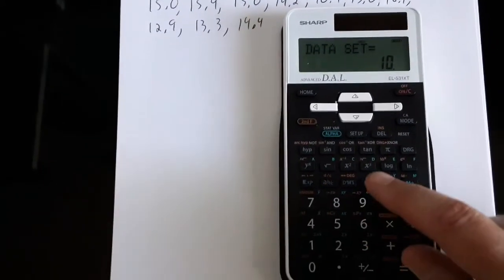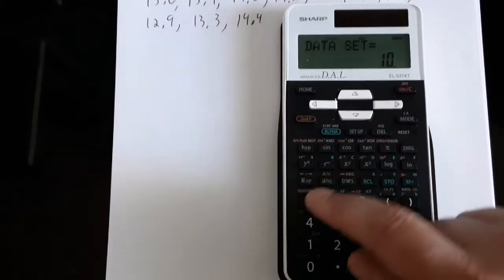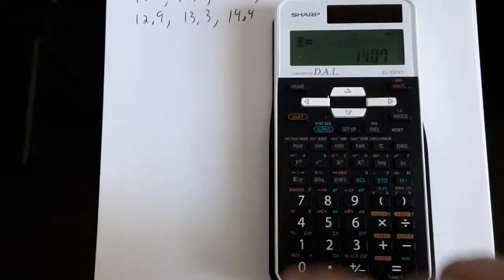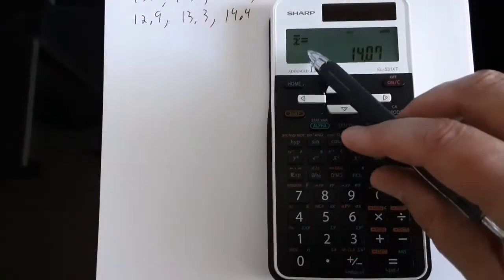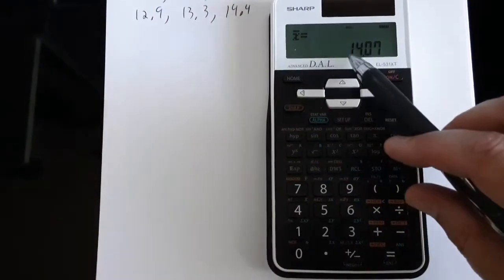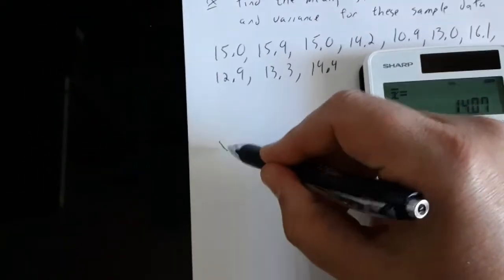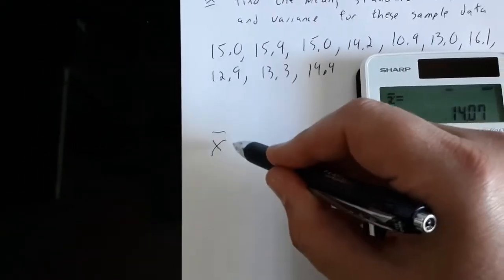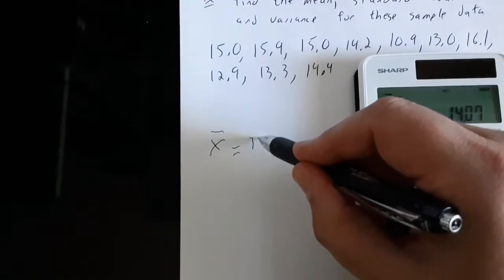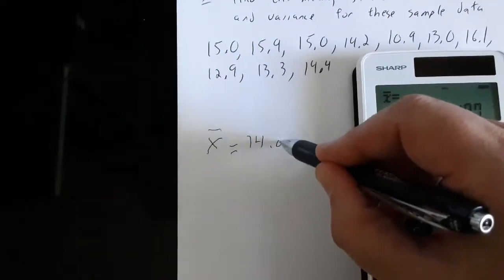So to find out the sample mean, I would touch recall number 4, and it tells me in my display window that X bar the sample mean is 14.07. So I'll say X bar, our sample mean is 14.07.